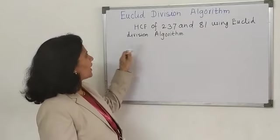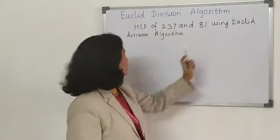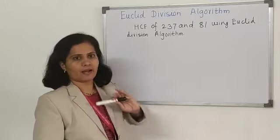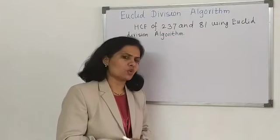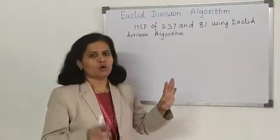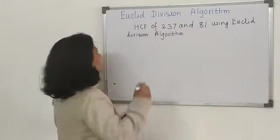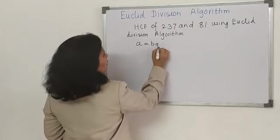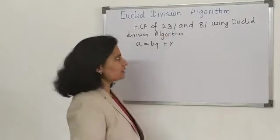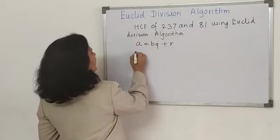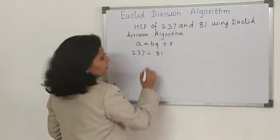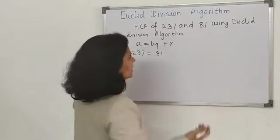Let's take an example: Find the HCF of 237 and 81 using Euclid's Division Algorithm. We have to use this algorithm to find the HCF of these two numbers. As we know, this is an application of Euclid's Division Lemma, so first we write it in that format: A = BQ + R. We will take A as 237 and B as 81.